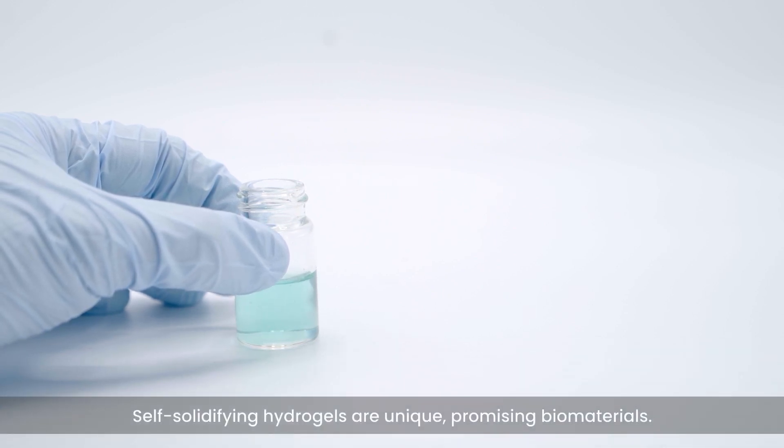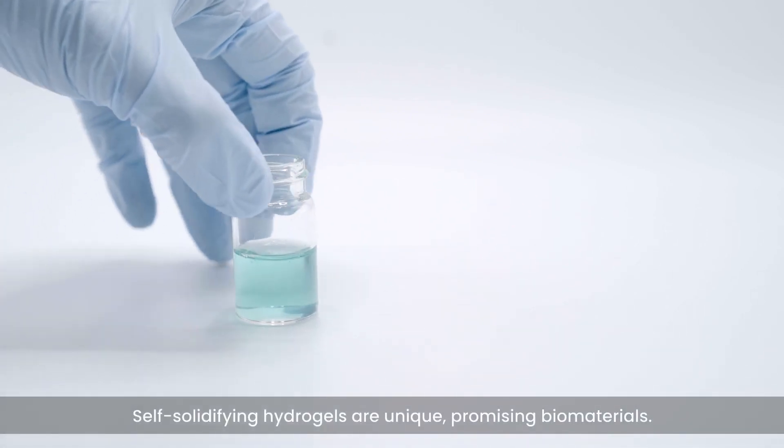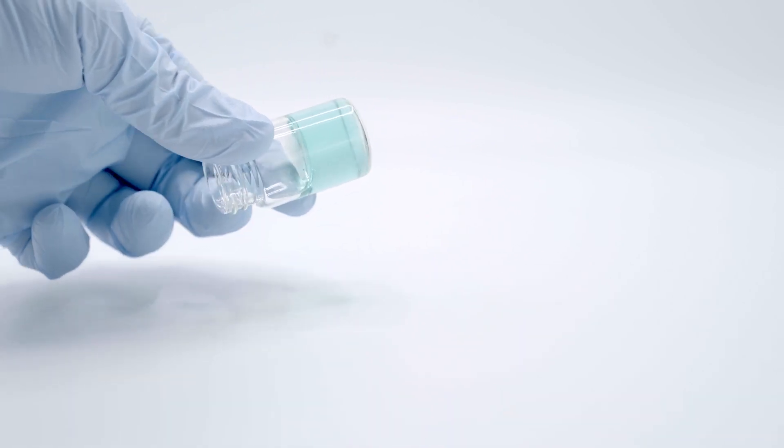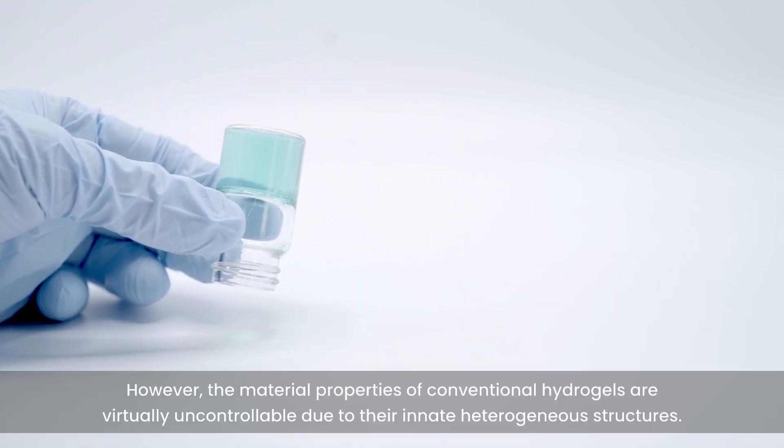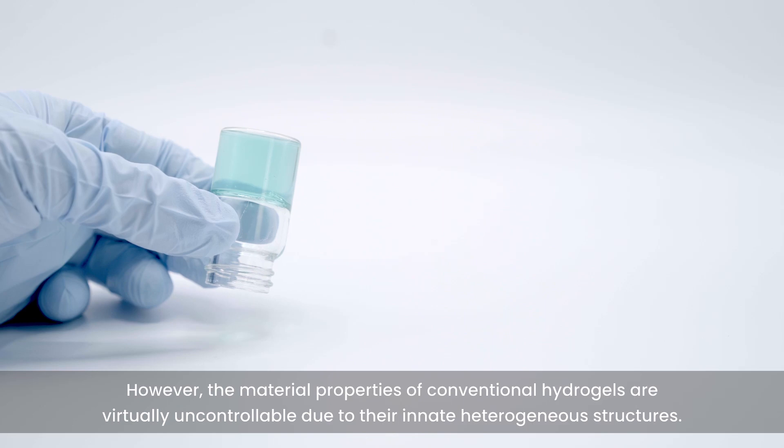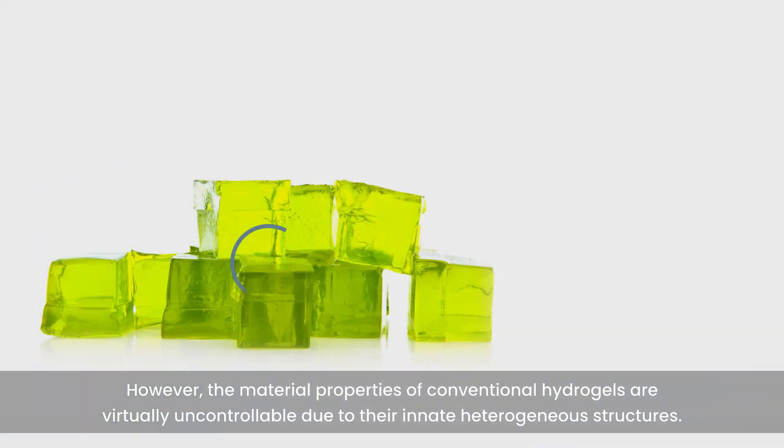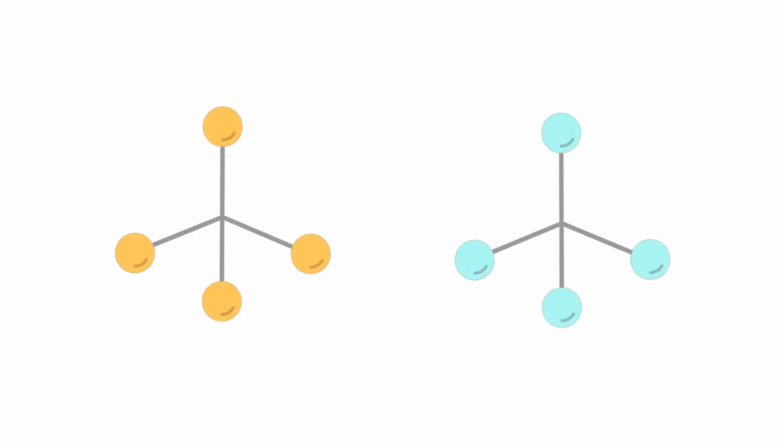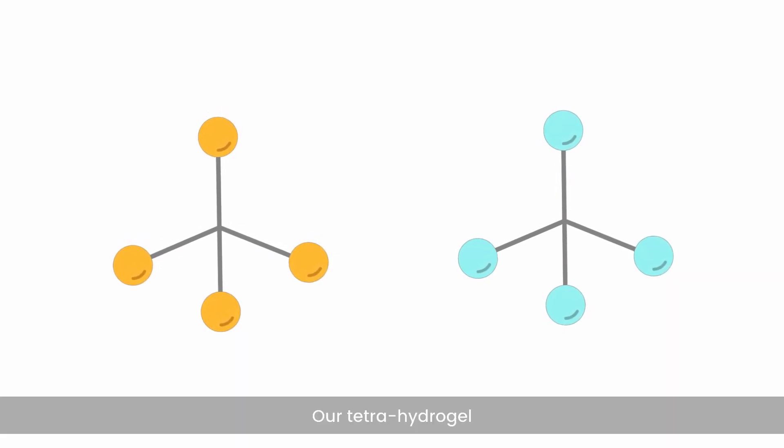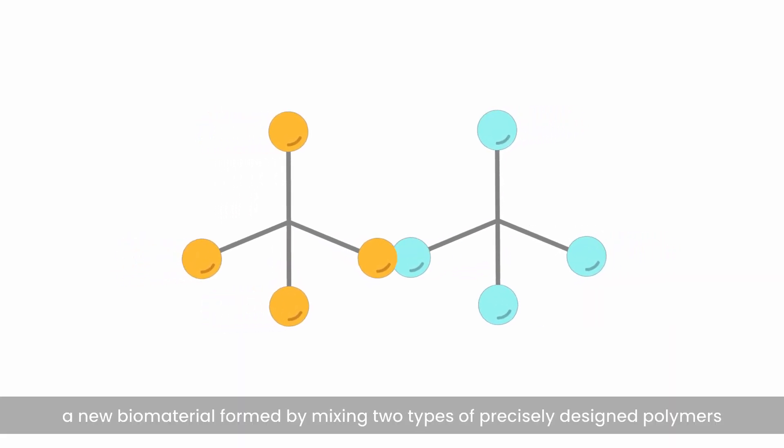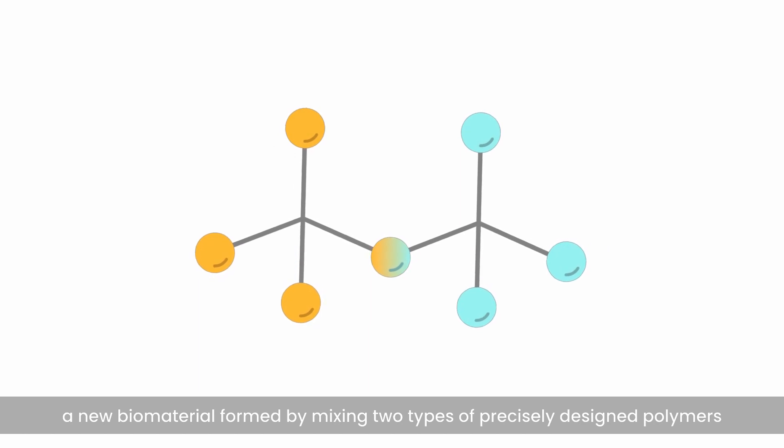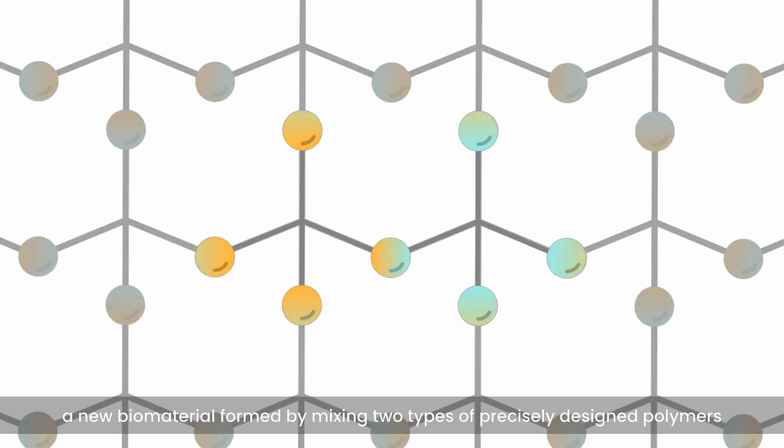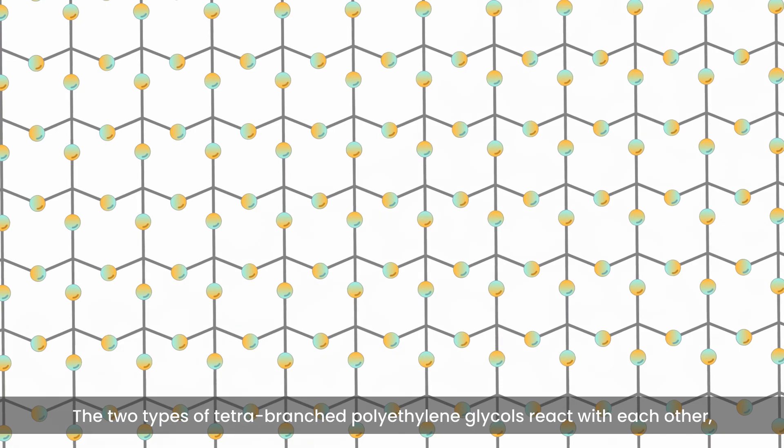Self-solidifying hydrogels are unique, promising biomaterials. However, the material properties of conventional hydrogels are virtually uncontrollable due to their innate heterogeneous structures. Our tetrahydrogel is a new biomaterial formed by mixing two types of precisely designed polymers.